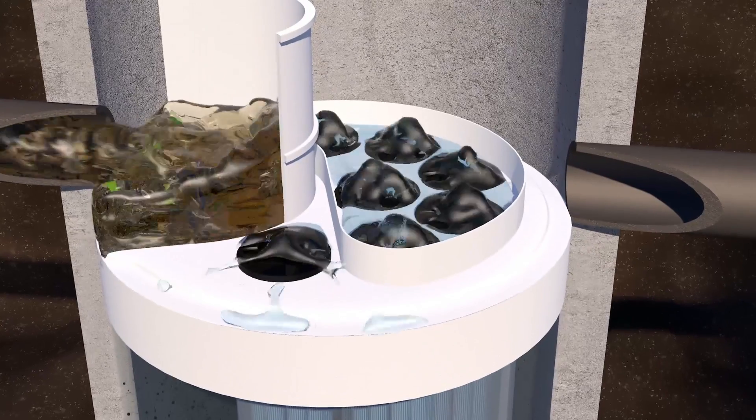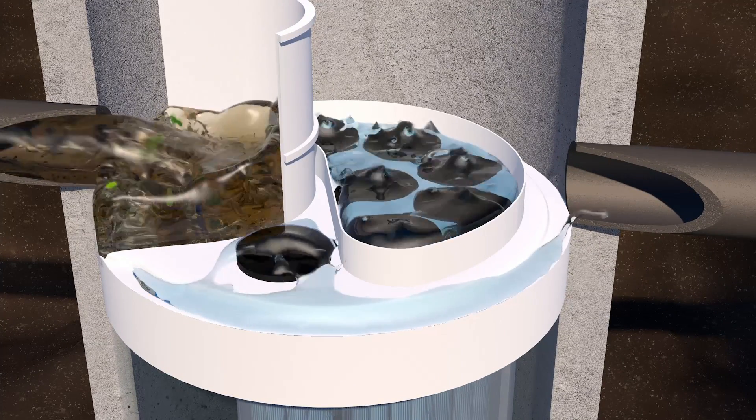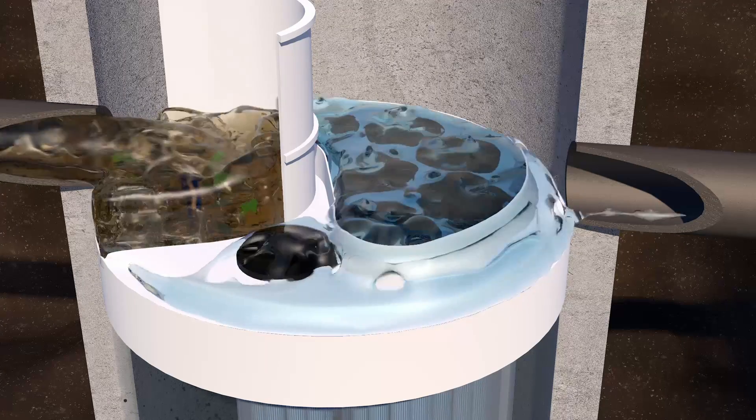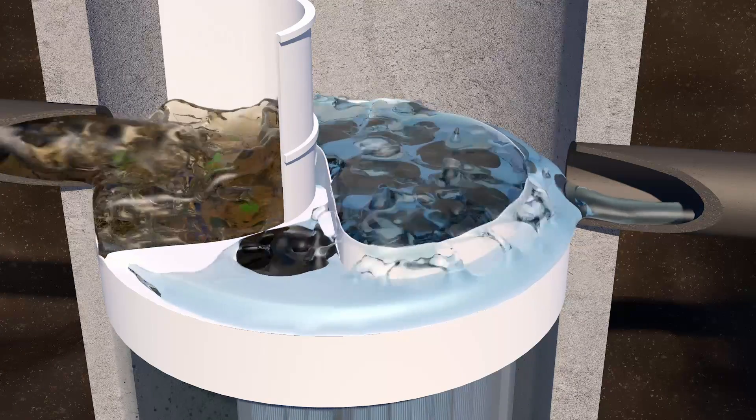Water is forced up from the treatment chamber through membrane filtration and into the backwash pool. Once the water has filled the backwash pool, water overflows the weir and exits via the outlet pipe.